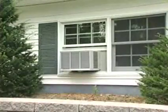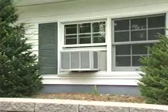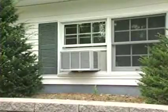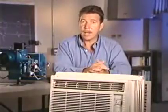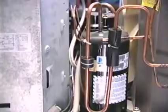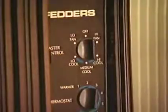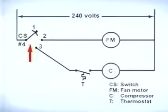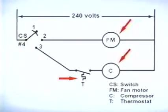Window air conditioners are commonly used to cool small areas and are among the most popular type of air conditioning systems. Although the complexity of this type of system varies greatly, the circuits are designed to operate in a similar manner. The unit is equipped with a compressor, a fan motor, a control switch, and a thermostat. The control switch is labeled CS and has four terminals, numbered 1 through 4. The fan motor, compressor, and thermostat are labeled FM, C, and T, respectively.